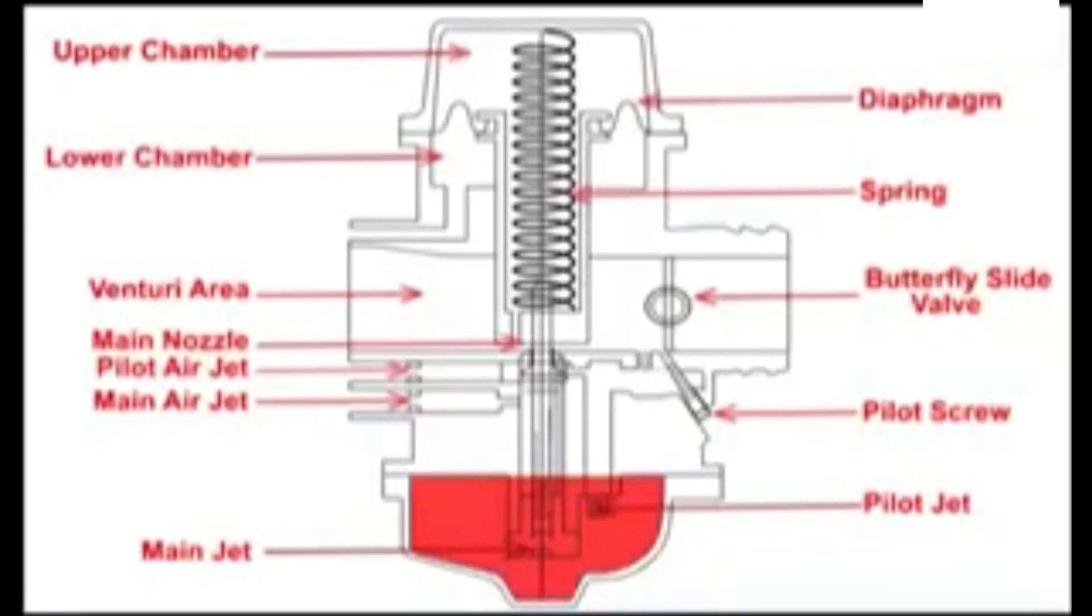This type of carburetor has an upper chamber, a lower chamber separated by a diaphragm, the venturi area, the butterfly valve, the main jet, pilot jet, float bowl, and pilot screw.